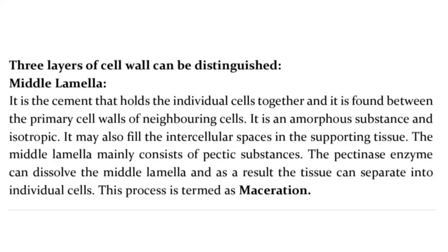Three layers of cell wall can be distinguished. The middle lamella is the cement that holds the individual cells together and it is found between the primary cell walls of neighboring cells. It is an amorphous substance and isotropic, and may also fill the intercellular spaces in the supporting tissue. The middle lamella mainly consists of pectic substances. The pectinase enzyme can dissolve the middle lamella, causing the tissue to separate into individual cells — a process termed maceration.